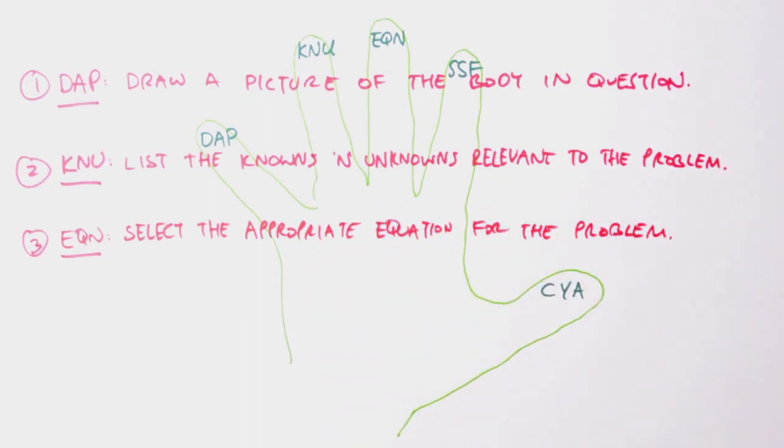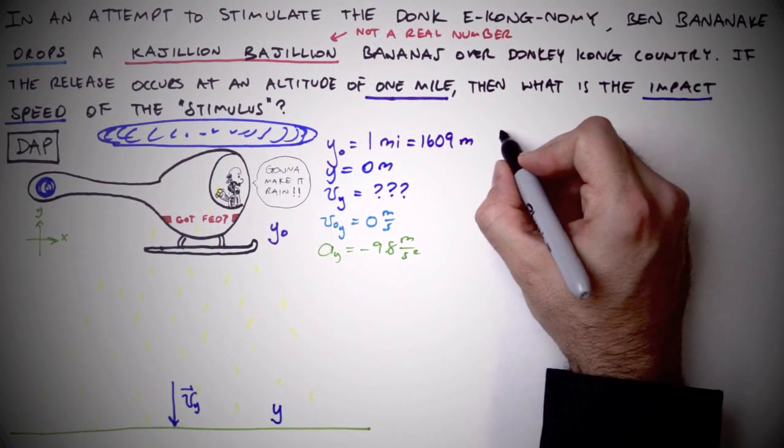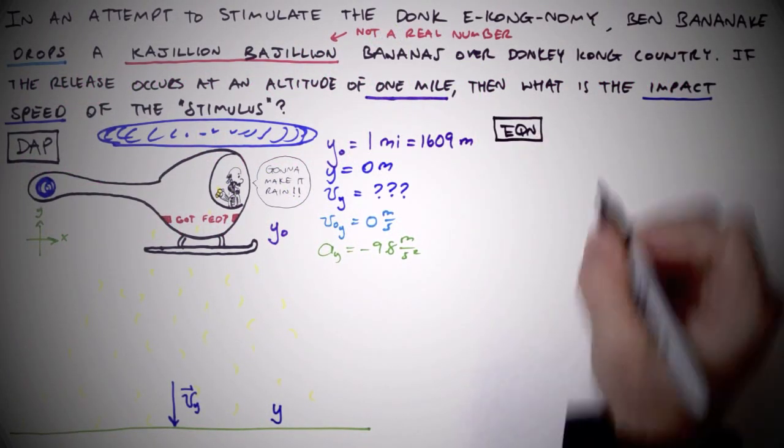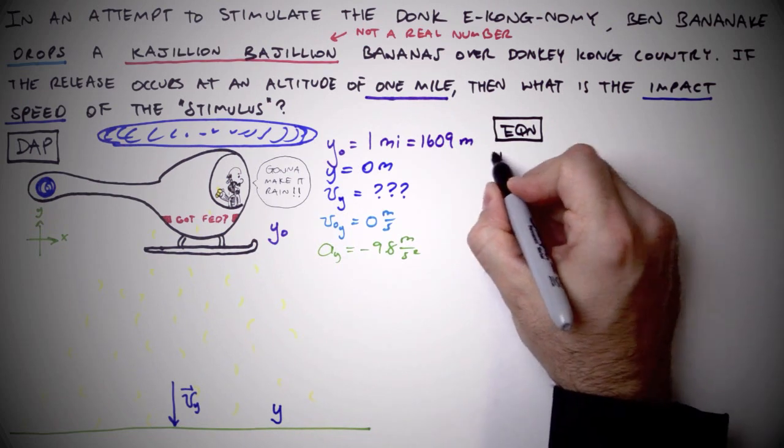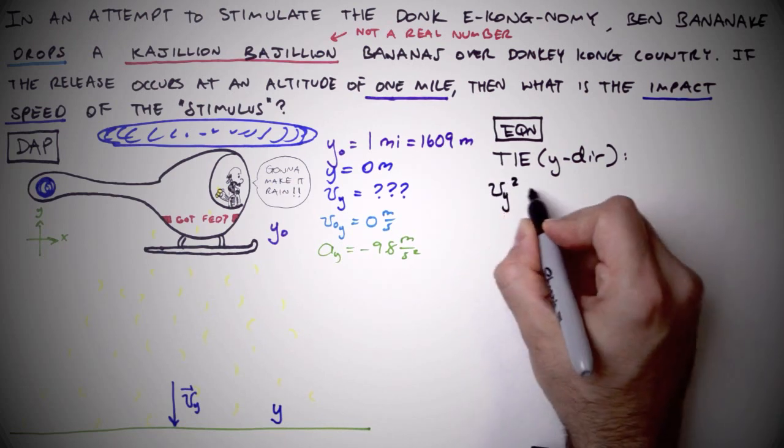This step is the crux of physics problems, and for green physics students, pardon the etymological pun, the bane of their studies. I can't count the number of times I've been asked, Professor Mason, which equation do I use? Alas, there is no silver bullet for choosing the right equation.